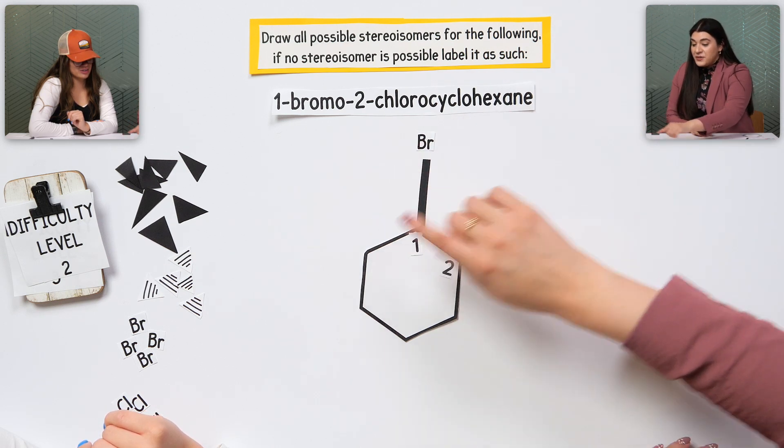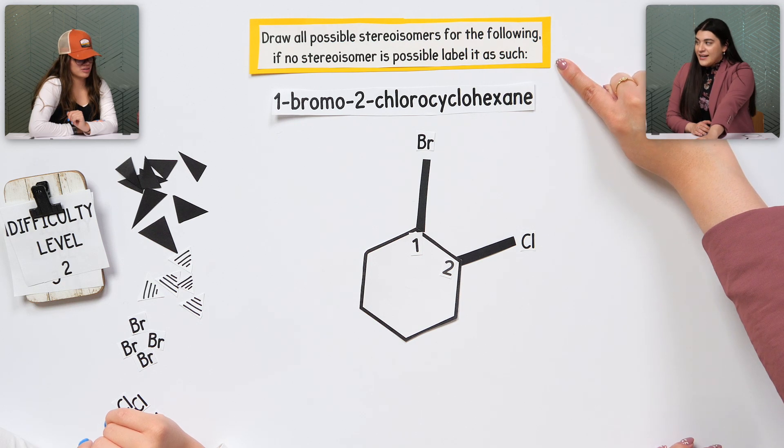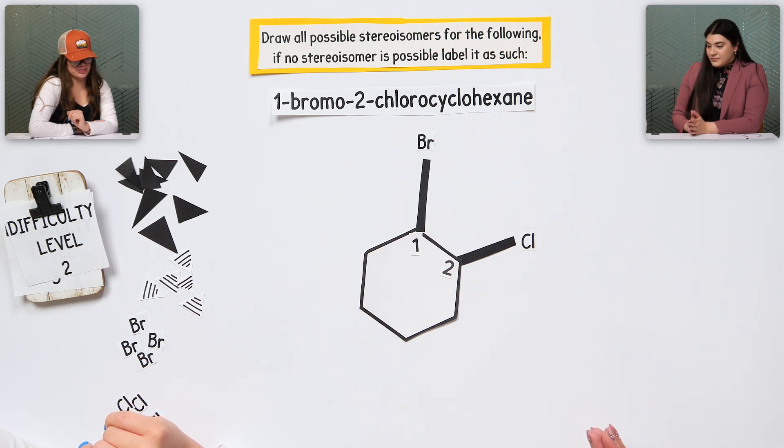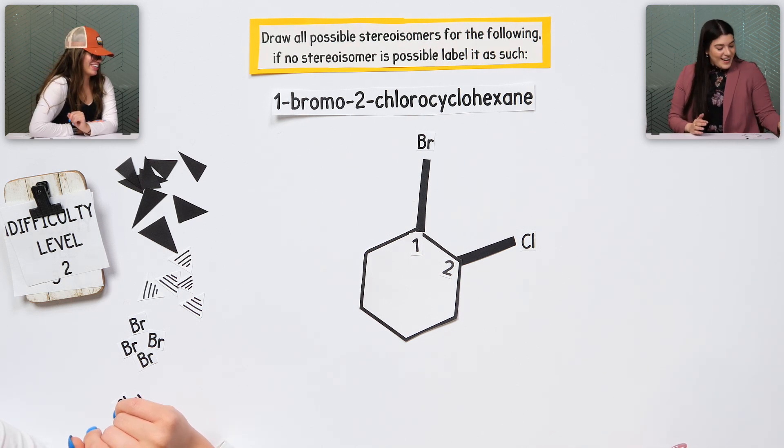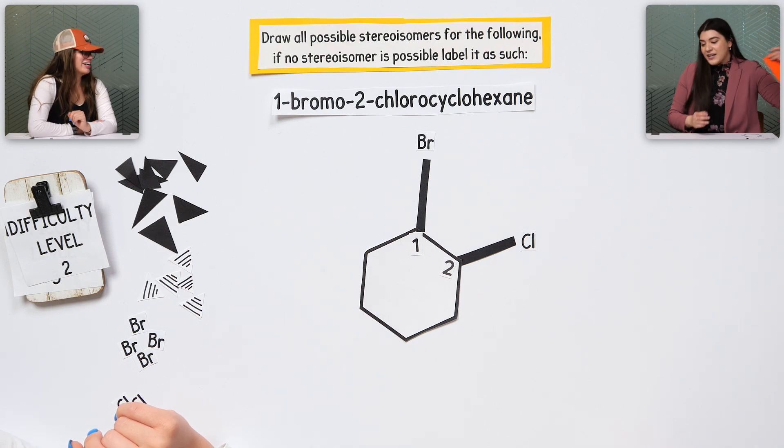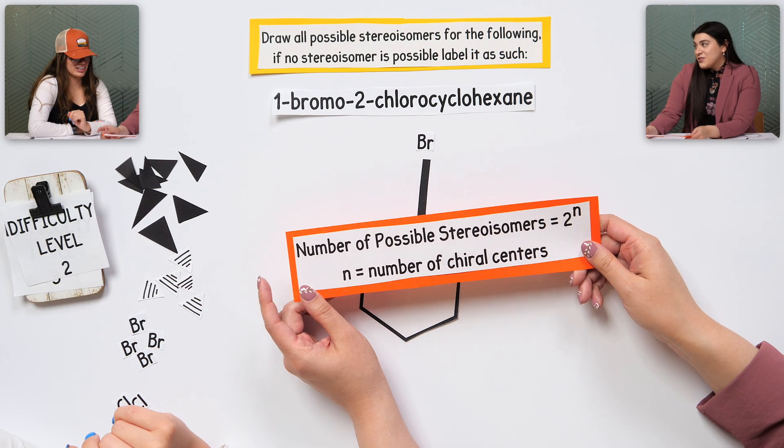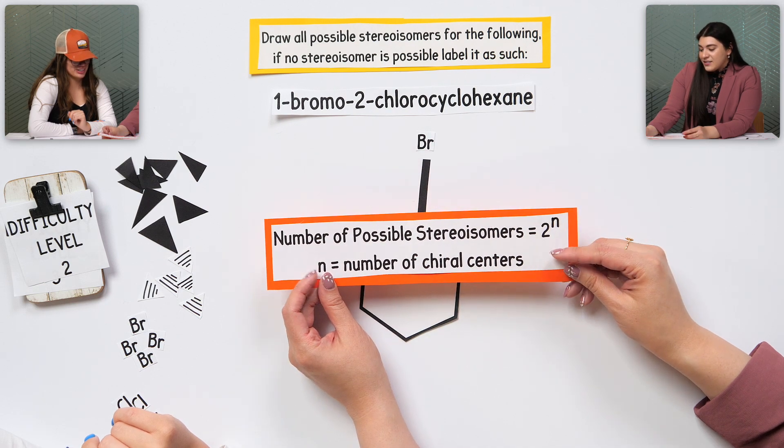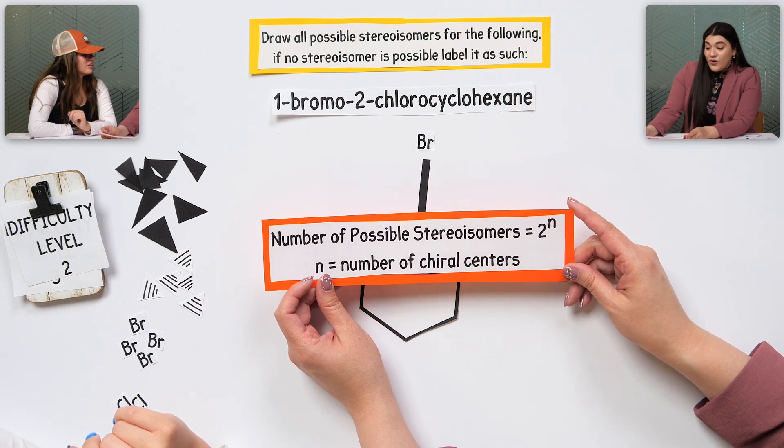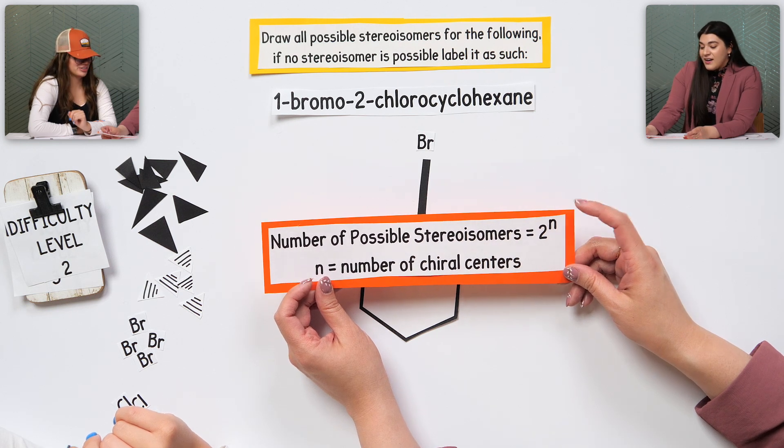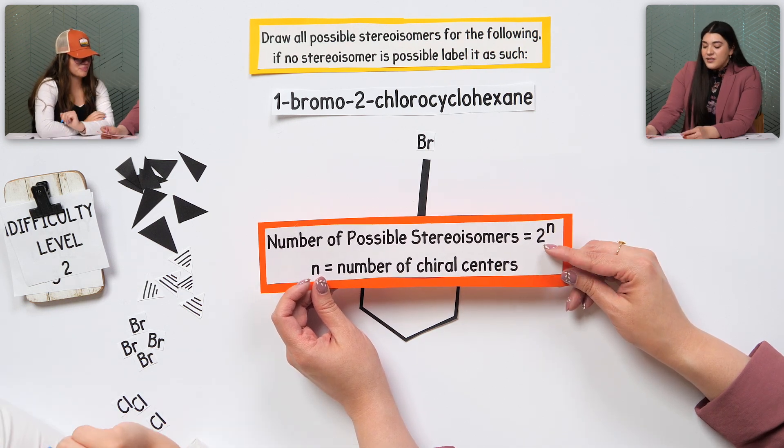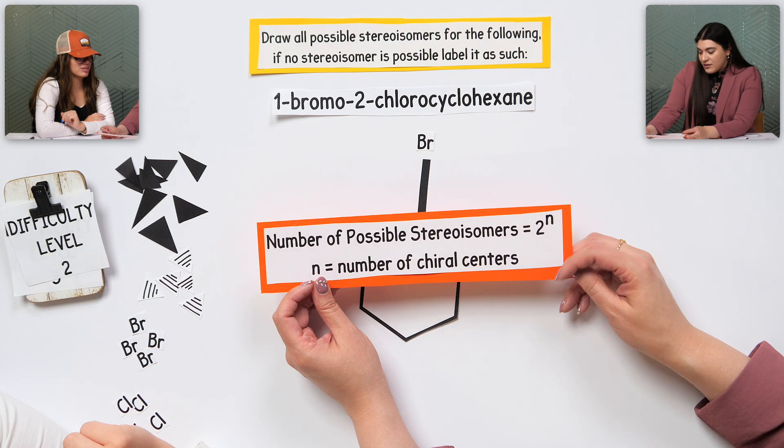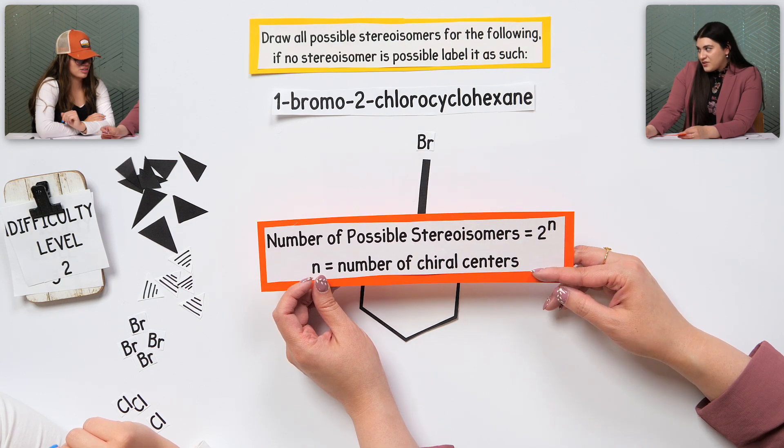Now, we've built what this is. What's the question asking? Draw all the possible stereoisomers. How do we know how many are possible? Yeah, I don't know, actually. Okay. So, this is going to go back to chirality, specifically chiral centers. So, there's a little formula here where it's the number of possible stereoisomers, it does not mean that they're all going to be there. It's just the possibility of them, is two raised to the nth power, n just means the number of chiral centers.